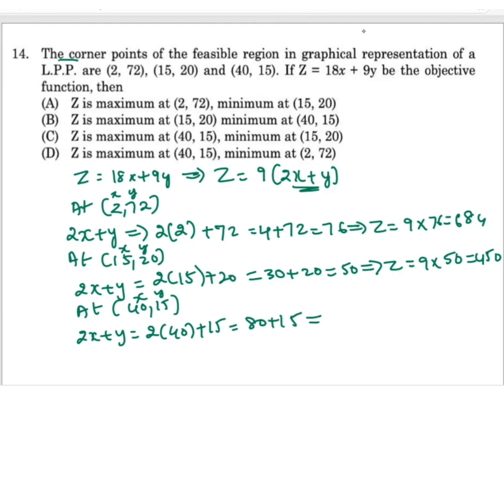80 plus 15 is 95. So it is 95. So Z will be 9 times 95, that will be 855.